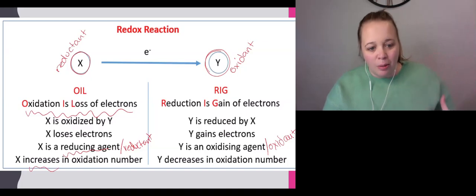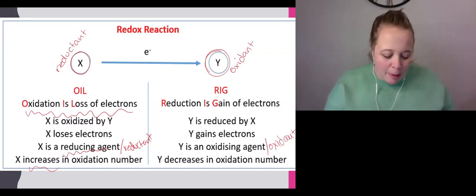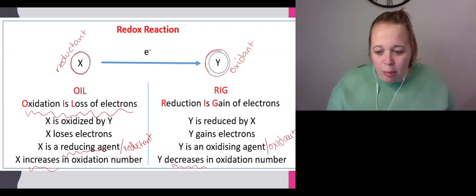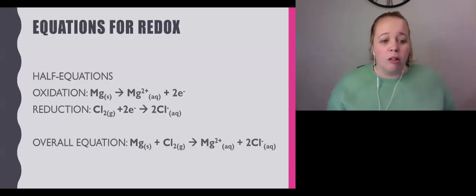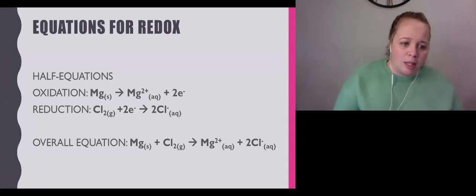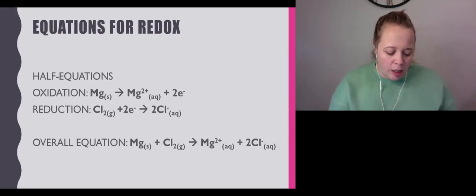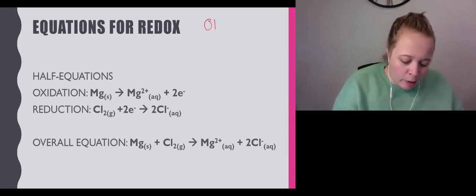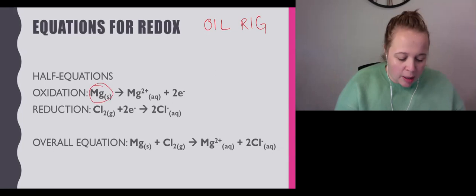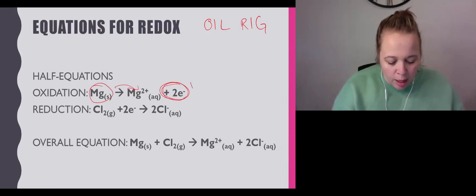Anything that gains electrons—that process is reduction. Y has been reduced because it gained electrons. Over time it decreases in oxidation number because it's gaining negative charges. Let's look at some overall equations. An oxidation equation: we start with magnesium solid becoming Mg2+ and it's lost two electrons.